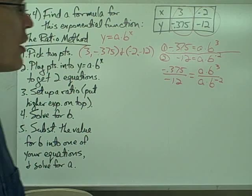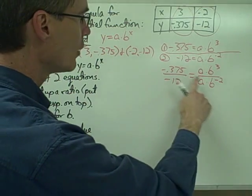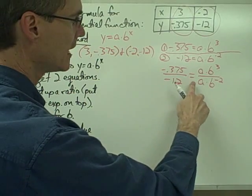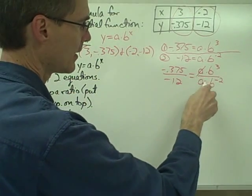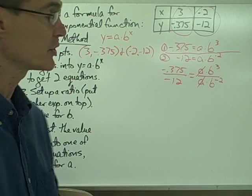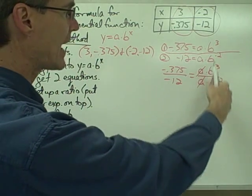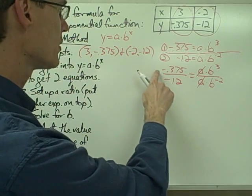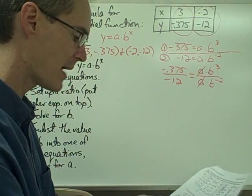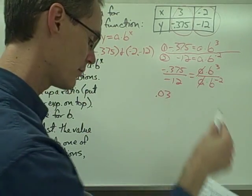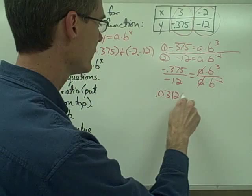Step four, solve for b. One of the things I notice here about my ratio, I want to solve this ratio for b. Notice that right away my a's cancel out, which is a good thing because otherwise I'd have two variables. So my a's cancel out, now I only have one variable. So negative 0.375 divided by negative 12, and if I punch that in my calculator, I get 0.03125.